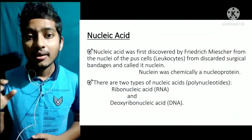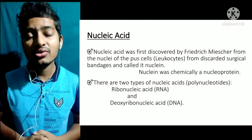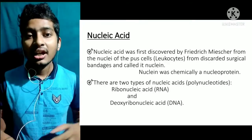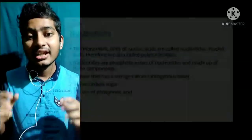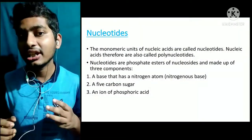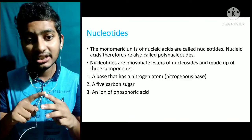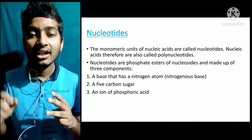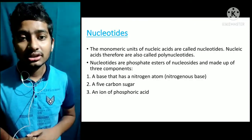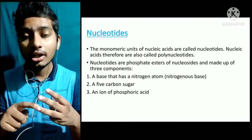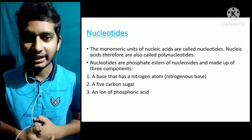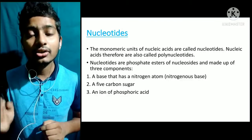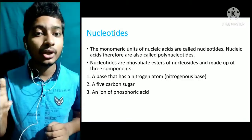That is why nucleic acids are also called polynucleotides. A nucleotide has three components: a sugar, a nitrogenous base, and a phosphate ion. All nucleotides in a nucleic acid are joined together by phosphodiester bonds.